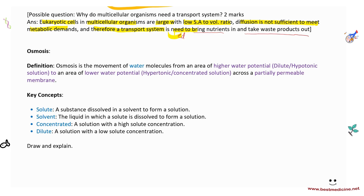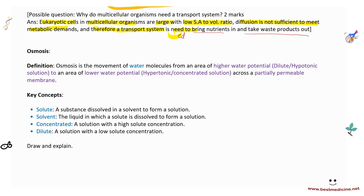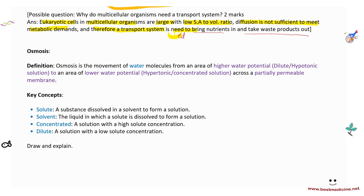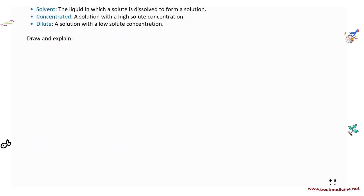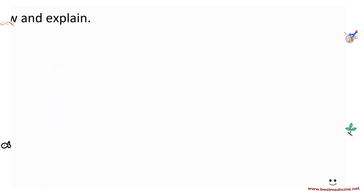Osmosis is the movement of water molecules from an area of higher water potential to an area of lower water potential across a partially permeable membrane. Let's look at what this means.